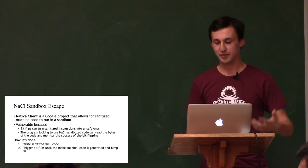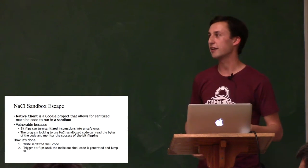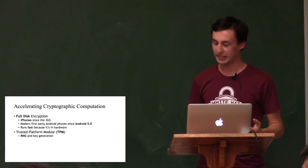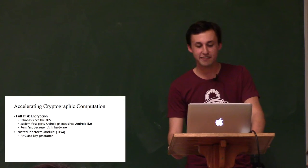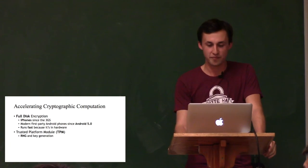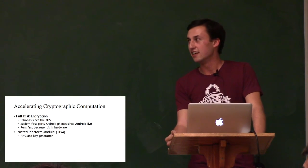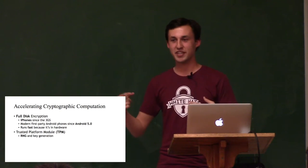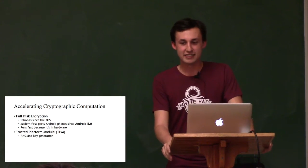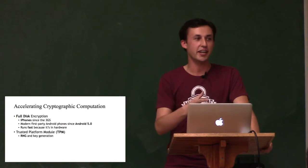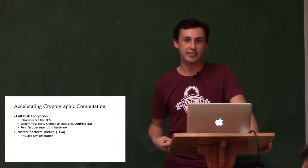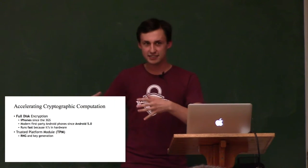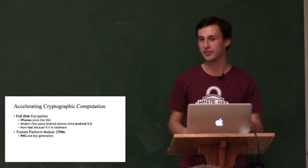So, that does it for hardware vulnerabilities. For the rest of the talk, I'll be talking about embedded hardware that allows for secure and accelerated cryptographic computation. And a really good example of this is full disk encryption, which I'm pretty sure at least most of you have in your pockets right now, because every iPhone since the 3GS has had hardware-accelerated disk encryption, and modern first-party Android phones have had it since Android 5. So, the reason that hardware-accelerated disk encryption is important is because if you're trying to access files on your phone, and it has to decrypt them in the CPU every time you access the disk, this will be really slow, because it takes time to encrypt and decrypt.